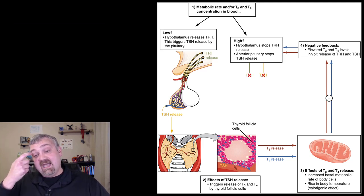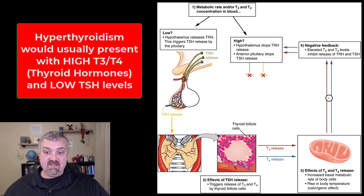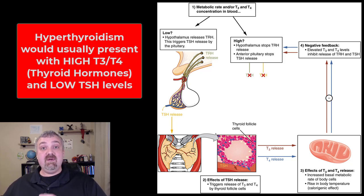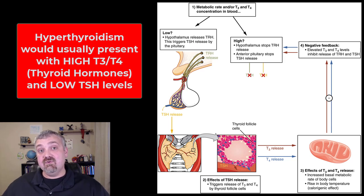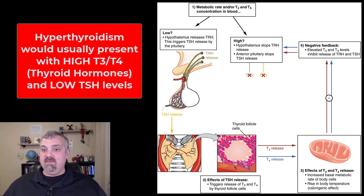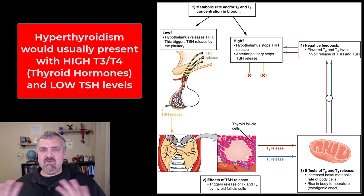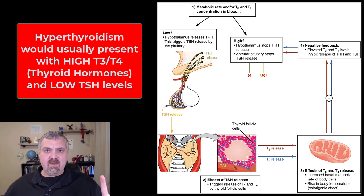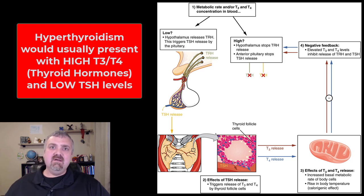On the opposite side, if someone has hyperthyroidism, their T4 and T3 levels will be elevated — they'll have too much thyroid hormone. Their TSH levels should be really, really low, because the pituitary gland should be saying: there's already too much thyroid hormone, I'm not going to keep making more. That's another example of negative feedback.